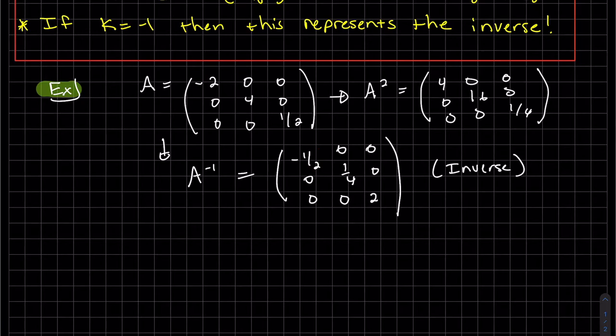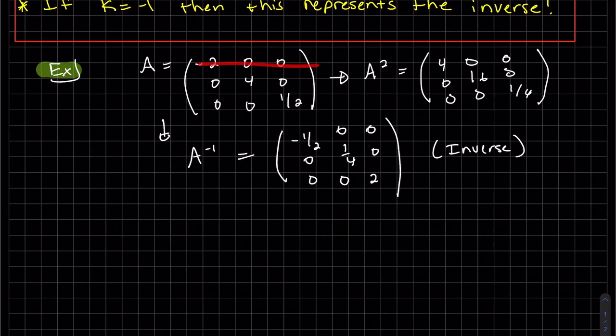You can check this by multiplying. This times this will get me one in the middle. This times this will get me the one here. And the first one, of course. This times this. And it works both ways.